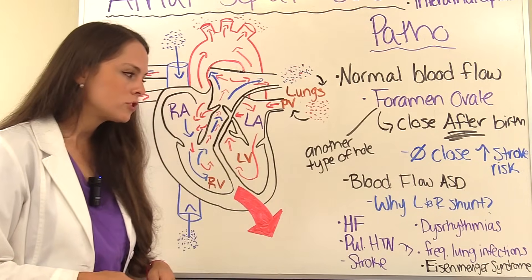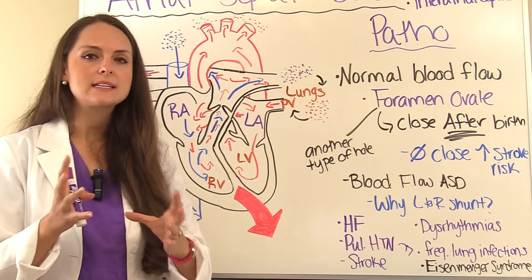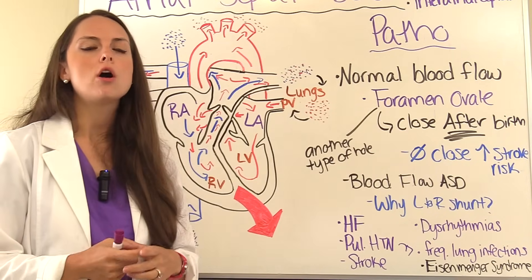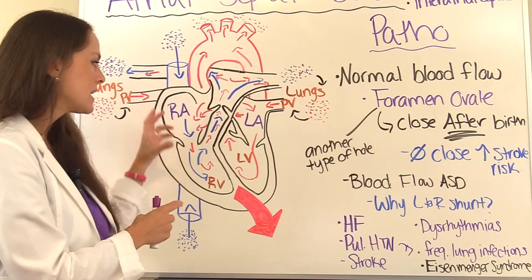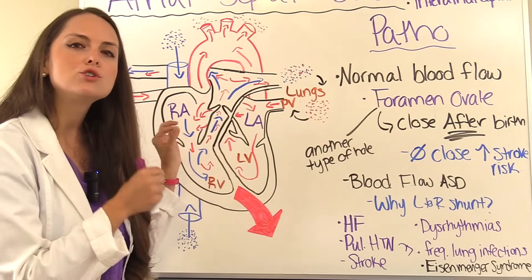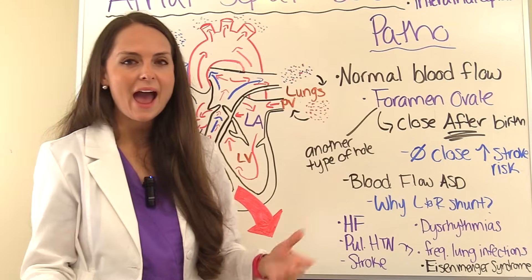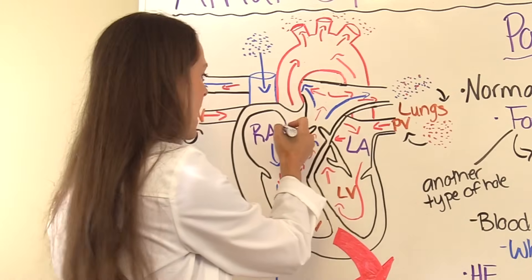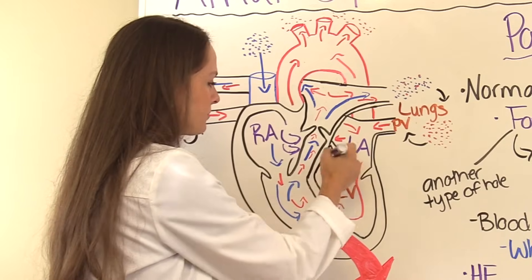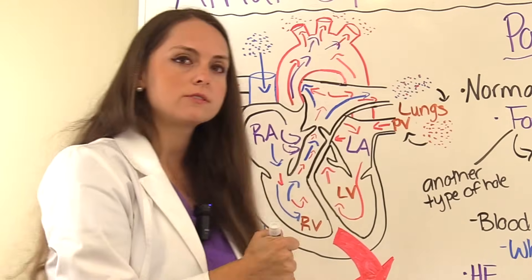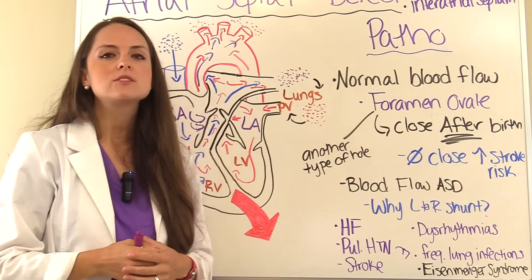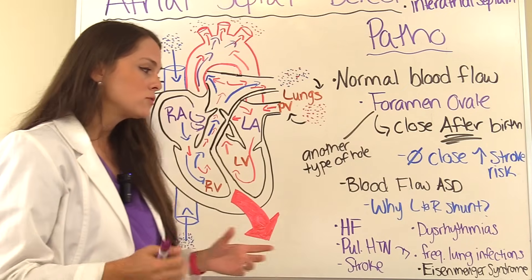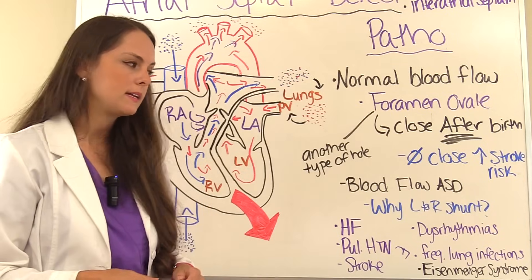We also talked about Eisenmenger syndrome. If the large ASD is not corrected over time, the pulmonary hypertension and heart failure will actually change the way shunting occurs, leading to reversal to right-to-left shunting. Unoxygenated blood goes into the left side and is pumped throughout the system, leading to cyanotic problems — low oxygen in the blood, clubbing of the fingers, and more. Once this occurs it is irreversible, though it is rare because treatment can be done.